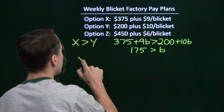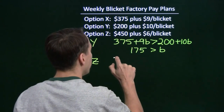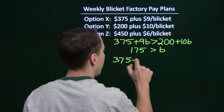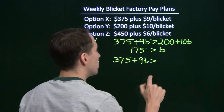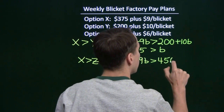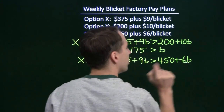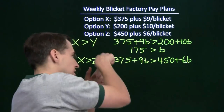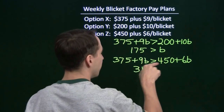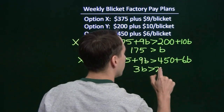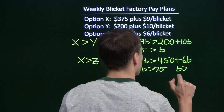Now let's compare option X to option Z — I want to see when X is better than Z. I make 375 plus 9B for option X, and I want to see when that's better than option Z, which is 450 plus $6 per blicket, so that's 6B. We're going to isolate the variable. I'm going to subtract 6B from both sides and subtract 375 from both sides. Subtracting 6B leaves 3B on the left; subtracting 375 leaves 75 on the right. I can isolate B by dividing both sides by 3, and I get B is greater than 25.